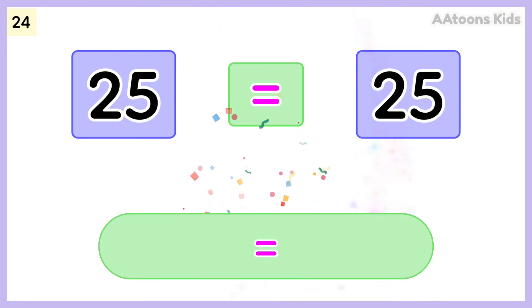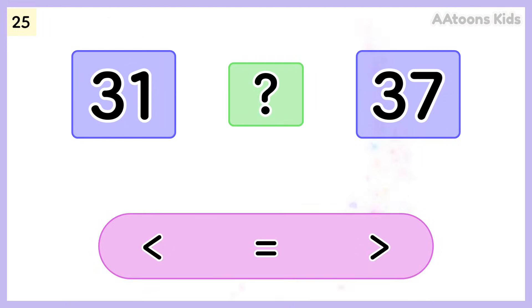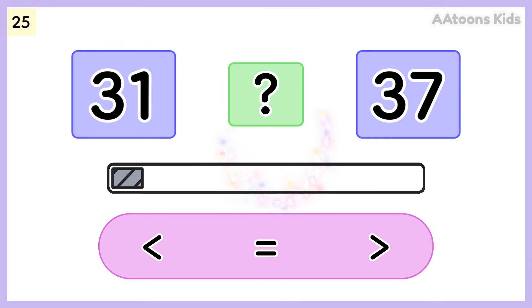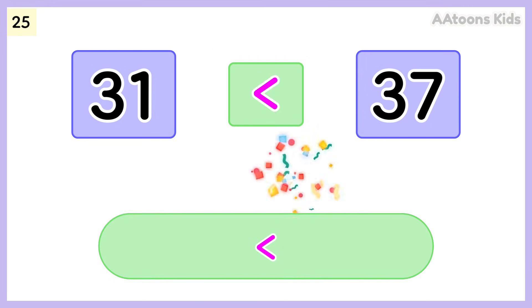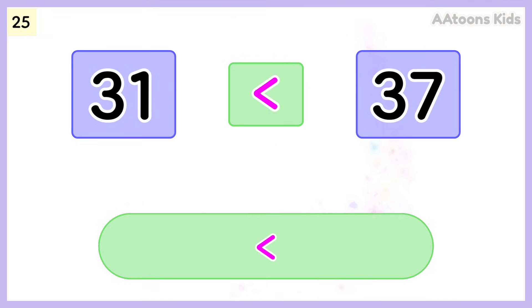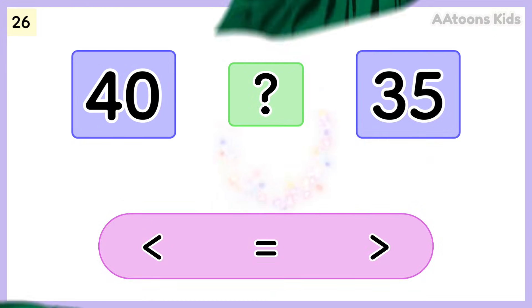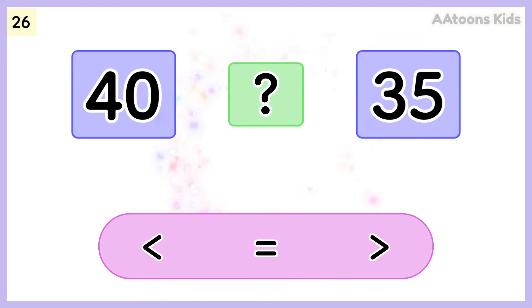Twenty-five is equal to twenty-five. Choose the correct symbol. Thirty-one is less than thirty-seven. Pick the correct symbol.